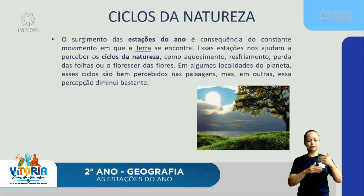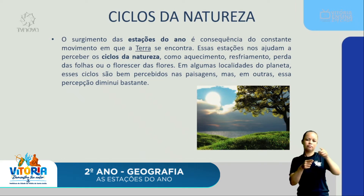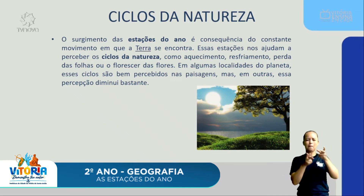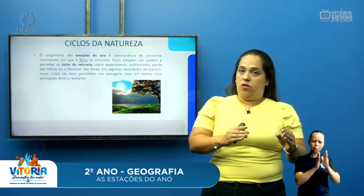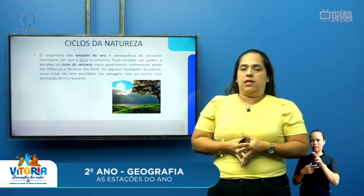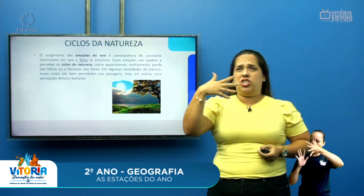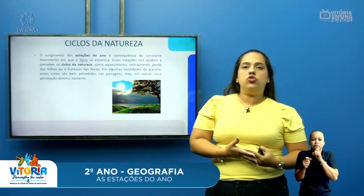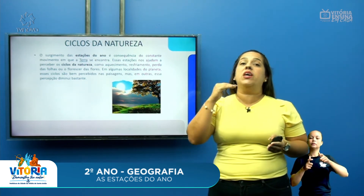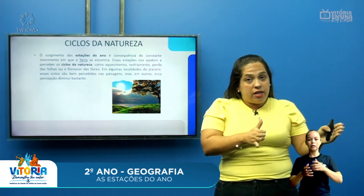As estações do ano nos ajudam a perceber os ciclos da natureza, como aquecimento, resfriamento, perda das folhas e o florescer das flores. Em algumas localidades do planeta, esses ciclos são bem percebidos nas paisagens. Mas em outras, a percepção diminui bastante. Em alguns lugares é bem definido — primavera, verão, outono e inverno. Mas em alguns lugares, como aqui no Brasil, em Vitória de Santo Antônio, a gente não costuma ver as folhas caindo no outono ou um inverno com neve.